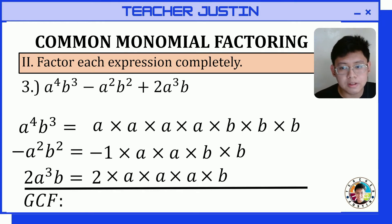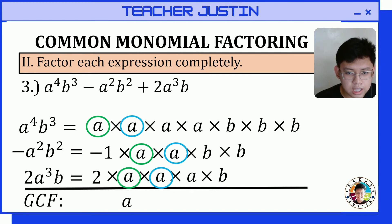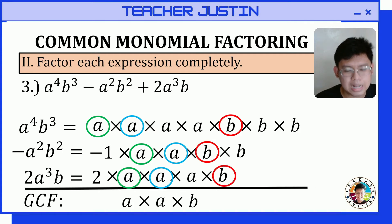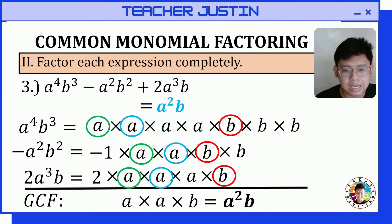Now let's get the greatest common factor. Identifying the common factors: we have a common factor of a, another a, and a common factor of b. Multiplying a times a times b gives us the greatest common factor, which is a squared b. Let's factor out a squared b from our polynomial.